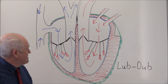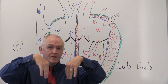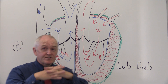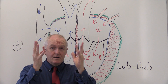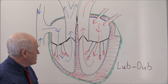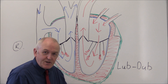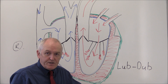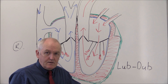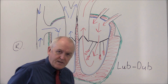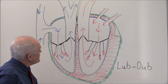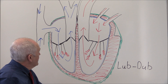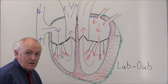So the atrioventricular valves produce a lub and the arterial semilunar valves produce a dub. Collectively, what you hear when you listen with your stethoscope is a lub-dub and then a pause - lub-dub, lub-dub. But don't take my word for it; try it on one of your friends as soon as possible. So there we have the basic flow of blood through the heart, controlled by the valves, ensuring one-way flow and circulation through this most incredible of pumps - the heart.